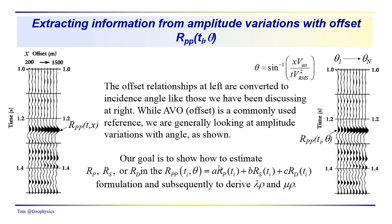When we look at this particular formulation, which comes from Fatih et al., we have terms R sub p, R sub s, and R sub d, which are going to allow us to come up with values for lambda rho and mu rho, the Lame parameters in combination with the densities.